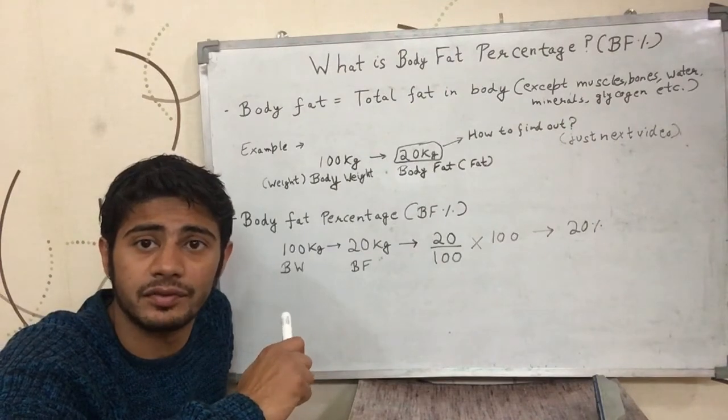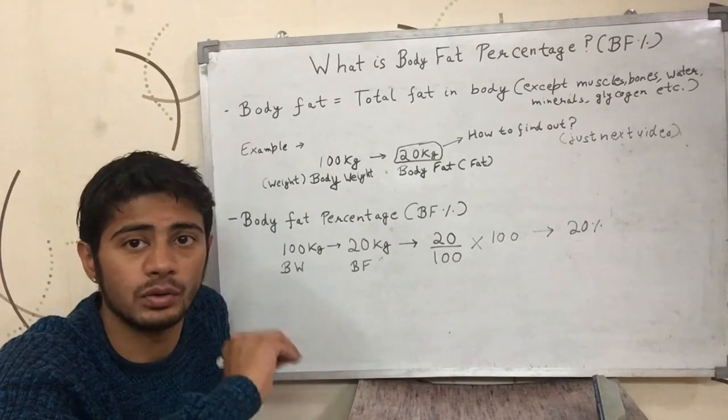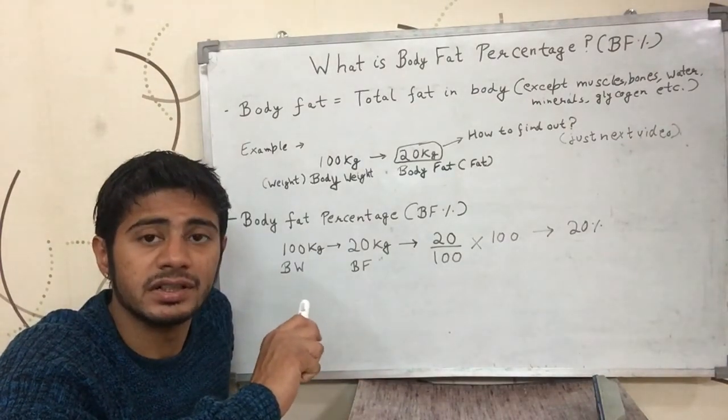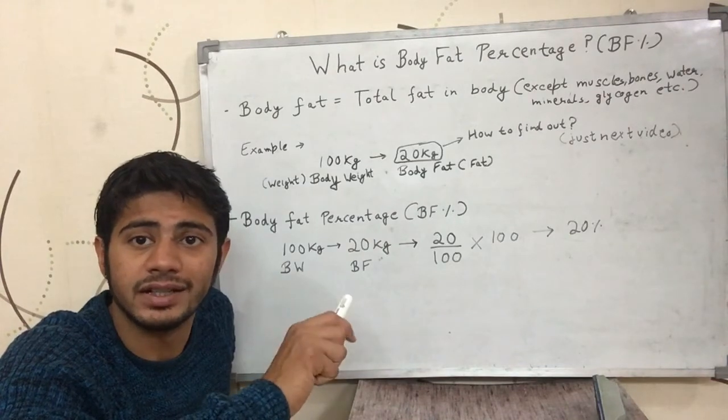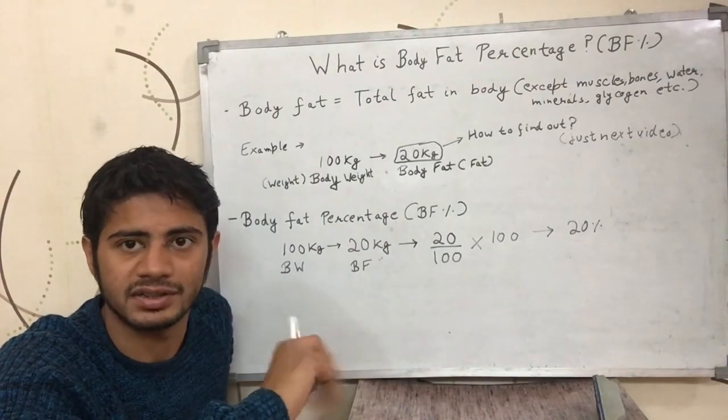So let's say there is a guy weighing 50kg and he has 5kg of fat in his body and we found that out somehow. So the body fat percentage for him will be 5 by 50 into 100 which is 10%.